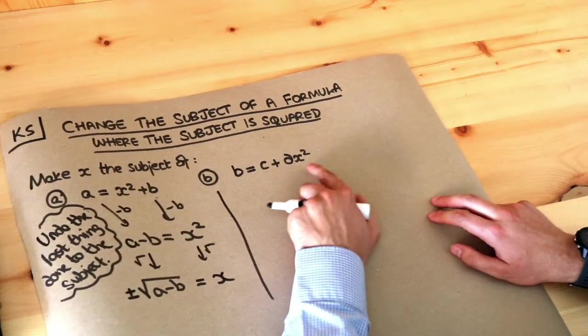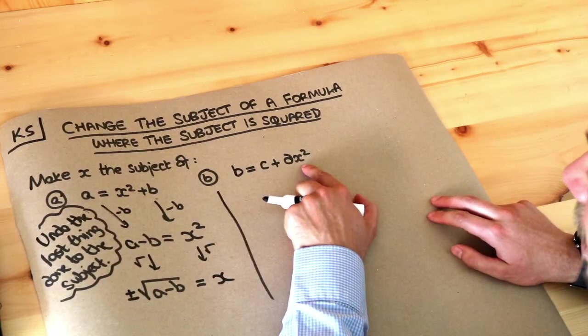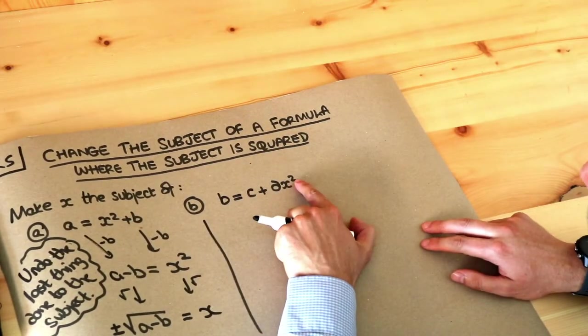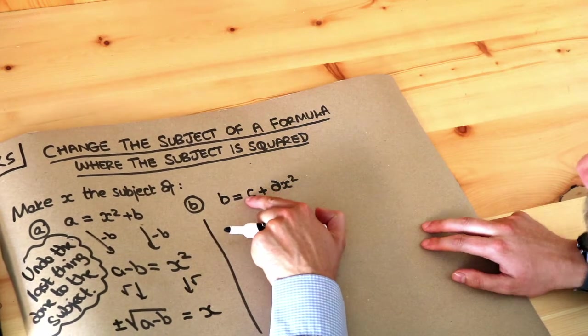Right, we're going to apply the same thing here. What is the story of what's happening to x, and we're going to undo each of those things in reverse order. x is being squared, then we times it by d, then we added c.